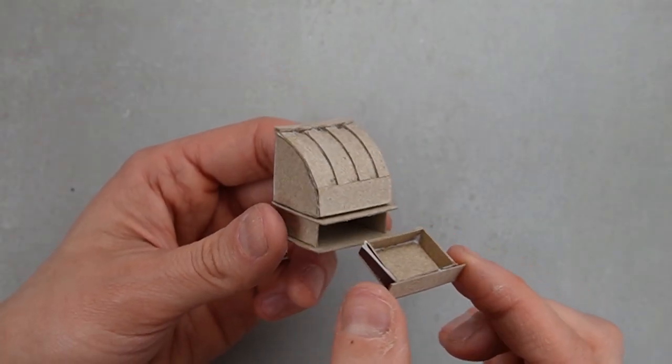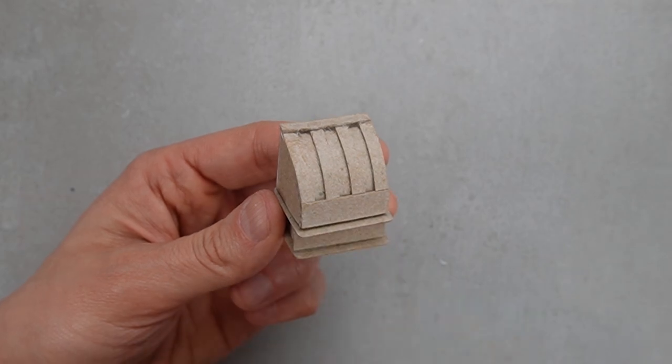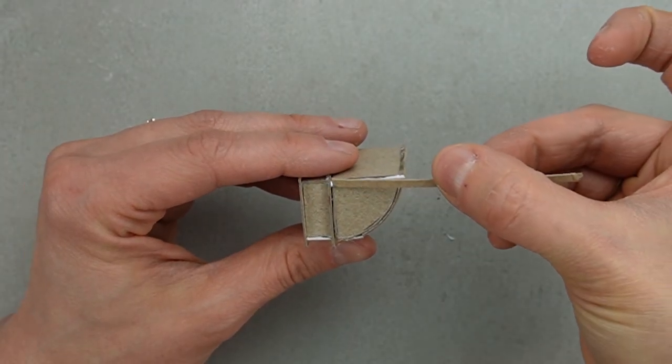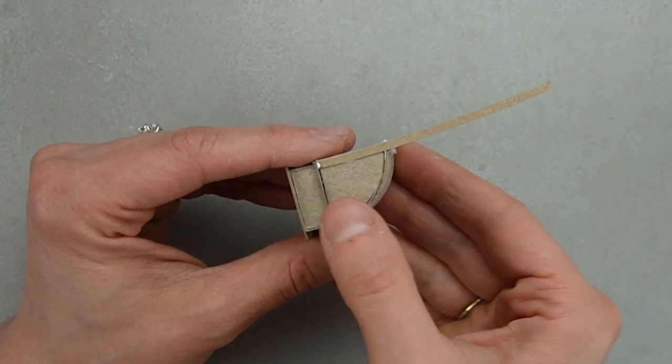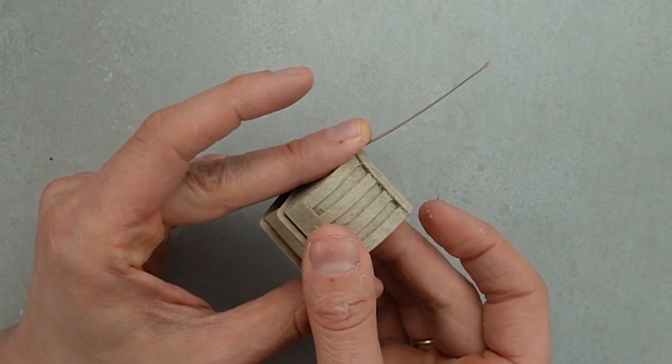I attached a larger rectangle to act as the drawer front. I added a skinny strip of cereal box to each side, leaving some overhang. I'll add more detail between the two strips later.